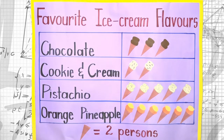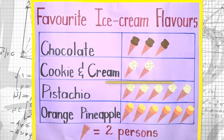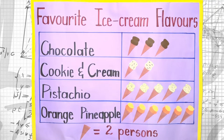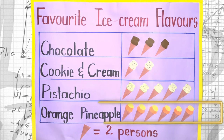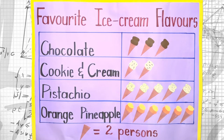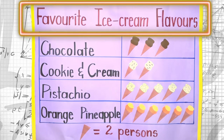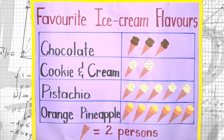What about cookie and cream? You would need two cones — correct! What about pistachio? Ten persons means five cones — excellent! And orange pineapple with twelve children requires six cones. Miss Brown also has to give the pictograph a title. The best title would be 'Favorite Ice Cream Flavors.' Now we have all four parts: our title, labels, symbols, and key.